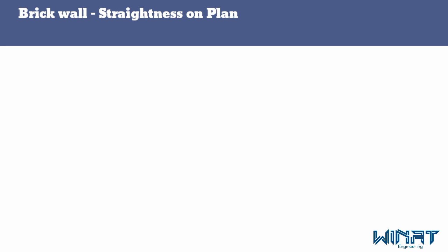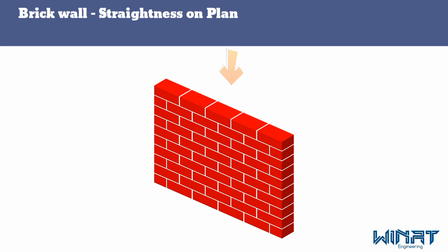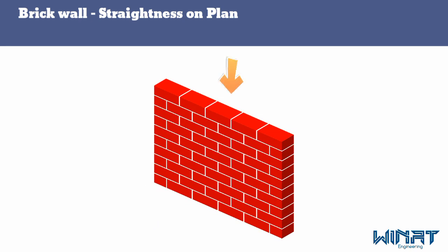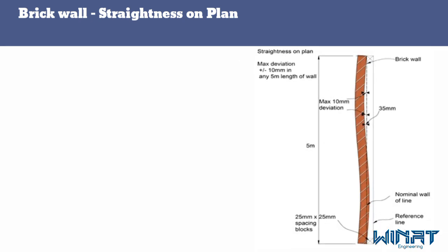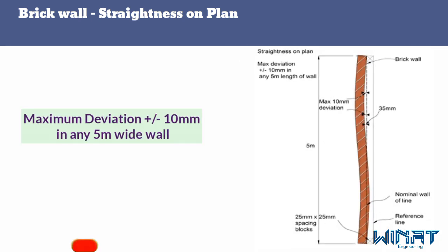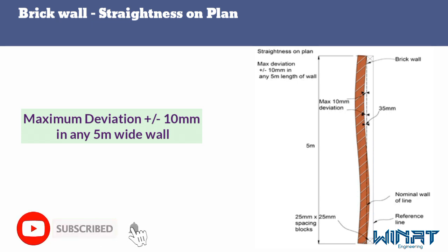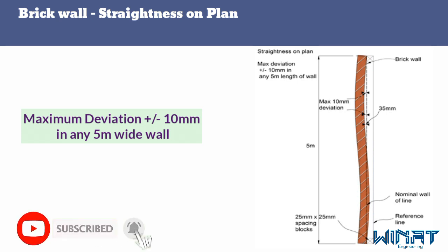The first tolerance is straightness on plan for a brick wall. The pictures show the plan view of the brick wall. For the straightness of the plan, the maximum deviation is plus or minus 10 millimeters in any 5-meter wide wall.